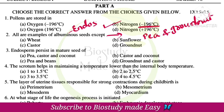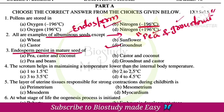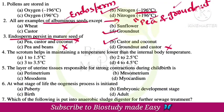These are non-albuminous seeds, so these seeds don't have persistent endosperm. Endosperm persistent in a mature seed: in groundnut the endosperm is consumed, so the right answer is option B — castor and coconut — which are albuminous seeds with persistent endosperm.